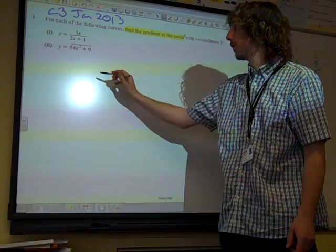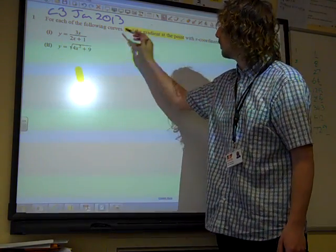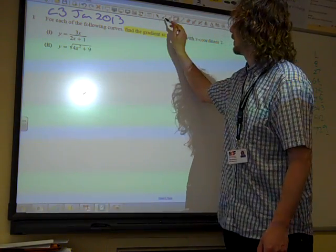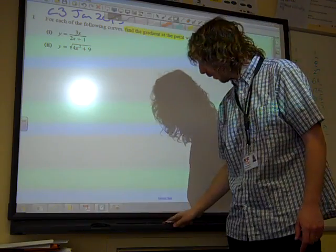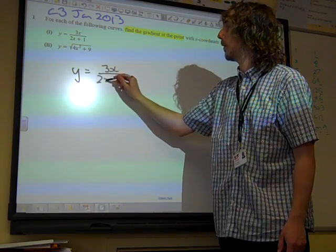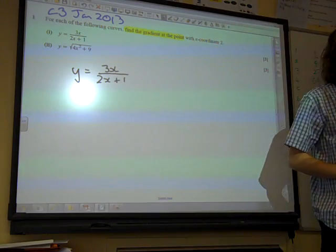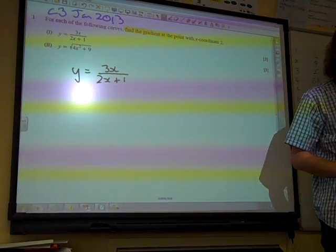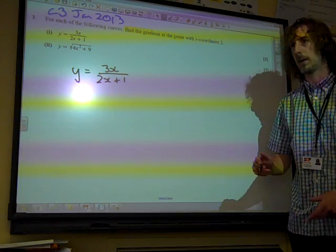Quotient rule. So, we're going to do the quotient rule with that. So, if y equals 3x over 2x plus 1, then you can write this formally with the u's and v's and stuff, or you can just go straight into it.